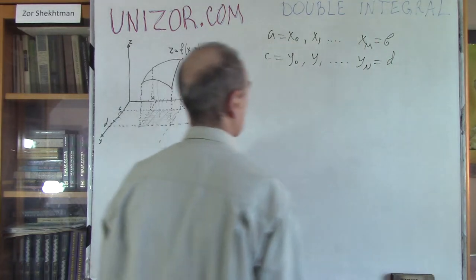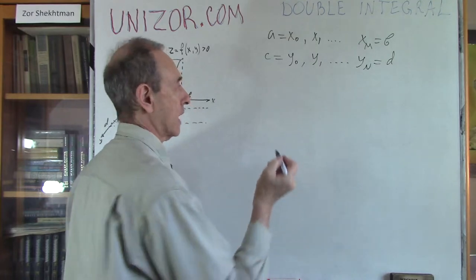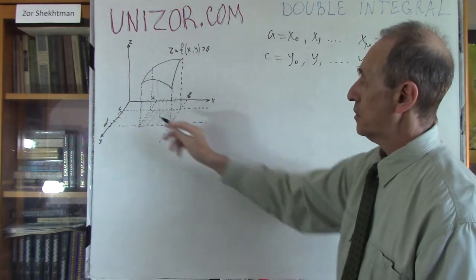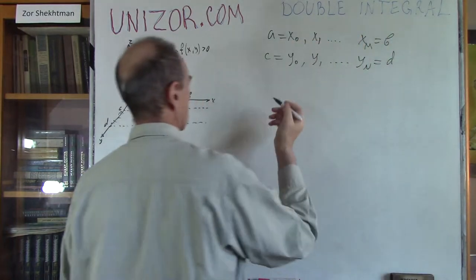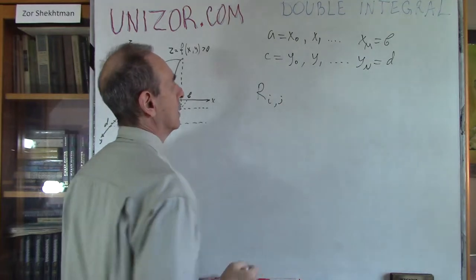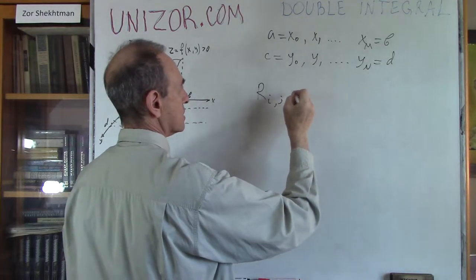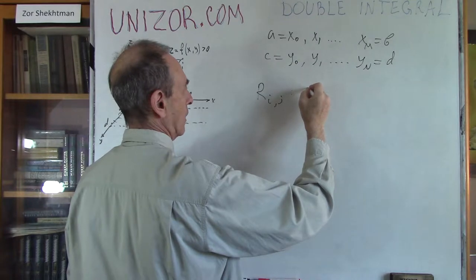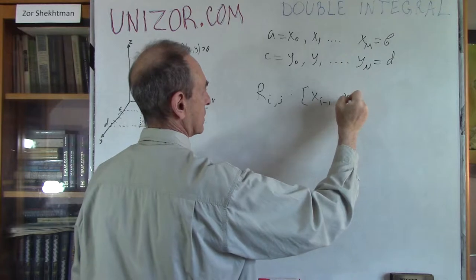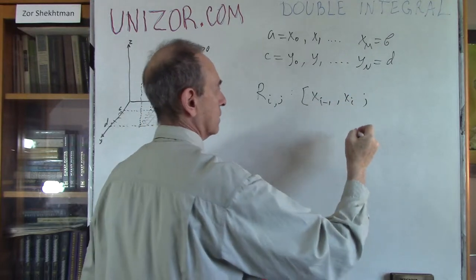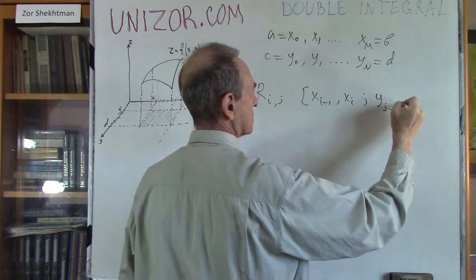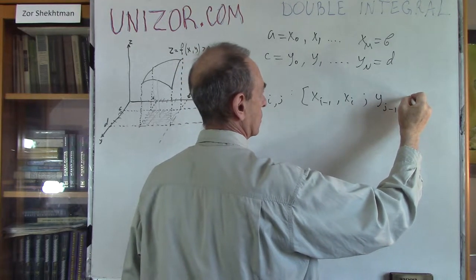Let's talk about one particular rectangle. I will use double indices. Rectangle R_{i,j}: on the x-side it goes from x_{i-1} to x_i, and on the y-side it goes from y_{j-1} to y_j.